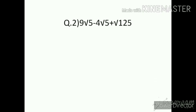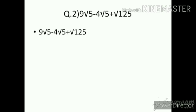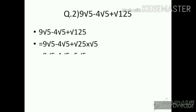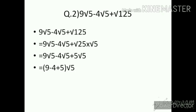Question number 2: 9√5 − 4√5 + √125. The first two terms have √5, but the third term is √125, so we need to split 125. Equal to 9√5 − 4√5 + √(25 × 5). 25 is a perfect square, so it comes out as 5, giving 9√5 − 4√5 + 5√5. Taking all coefficients together: (9 − 4 + 5)√5 = 10√5.